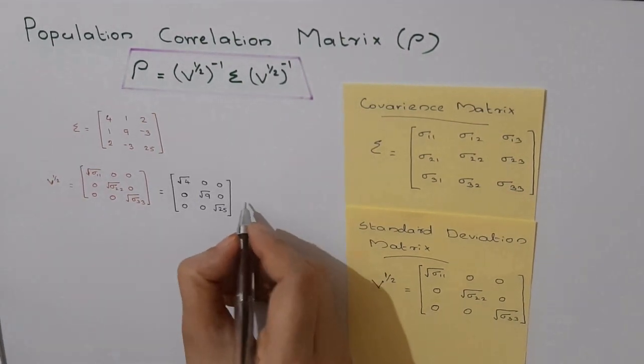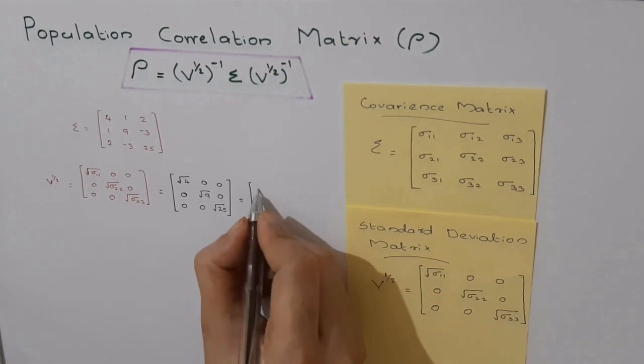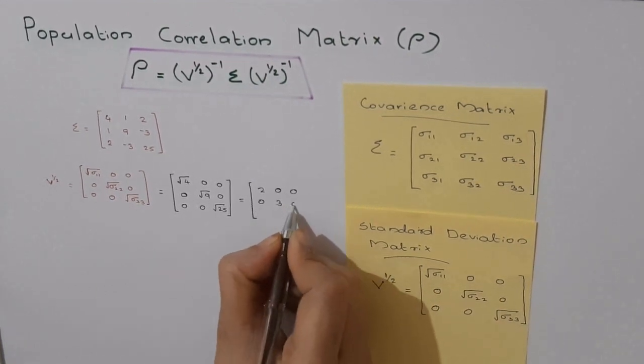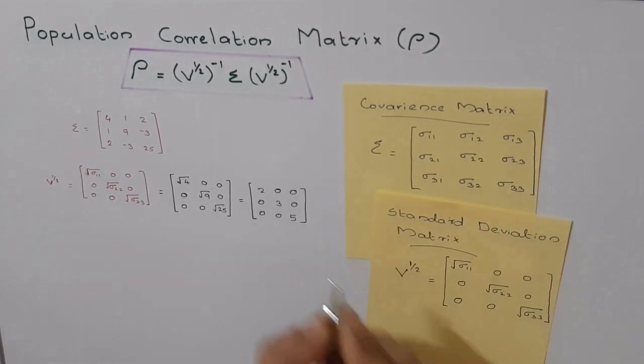So that is equal to the matrix [2, 0, 0; 0, 3, 0; 0, 0, 5].